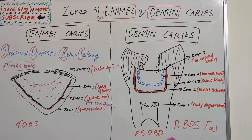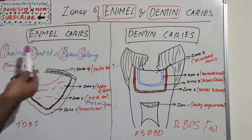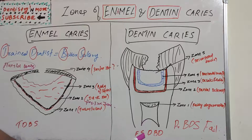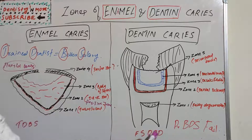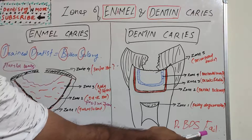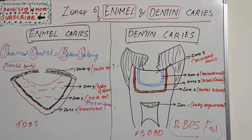For dentinal caries, the mnemonic is 'DR BDS FAIL' — but note this is in reverse order from outermost to innermost: D for Decomposed zone, B for Bacterial invasion, D for Decalcification, S for Sclerotic zone, and F for Fatty degeneration. These mnemonics help memorize the zones of enamel and dentinal caries. Thank you, and I'll come up with a new session in neuropathology.